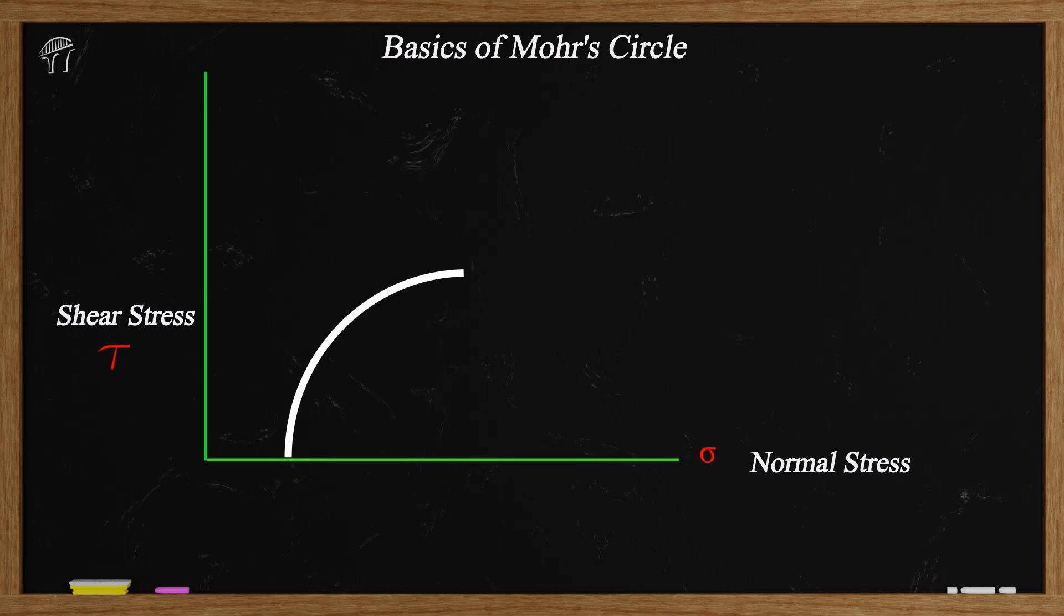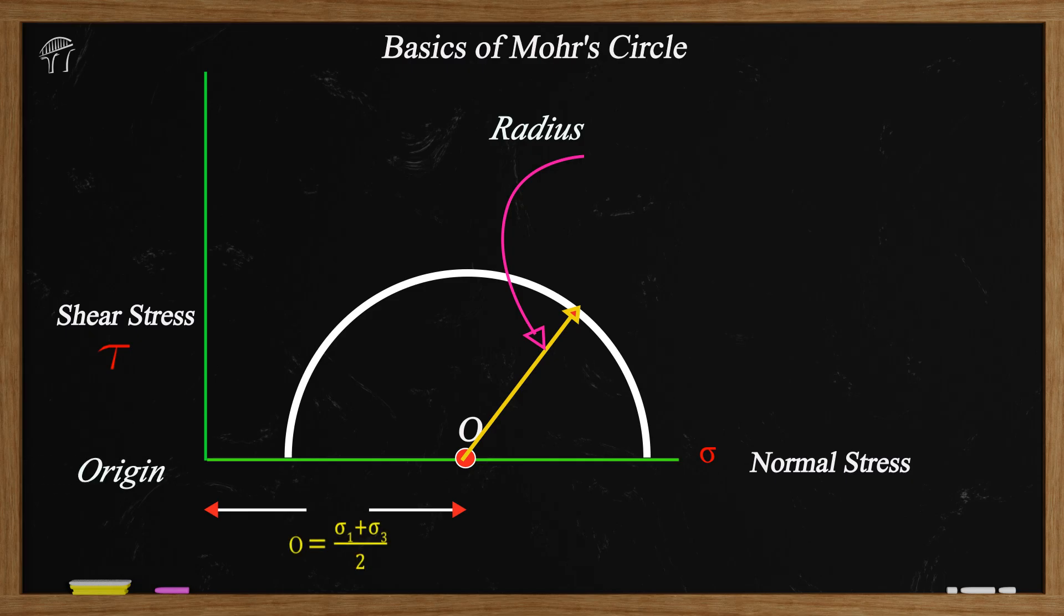To draw any circle we need to define two important parameters. First, center of the circle. Second, radius of the circle. The center of Mohr circle in a triaxial test is located at a distance O equals sigma 1 plus sigma 3 by 2, of course from the origin of the plot. And the radius of circle is r equals sigma 1 minus sigma 3 by 2.